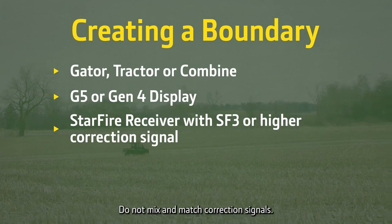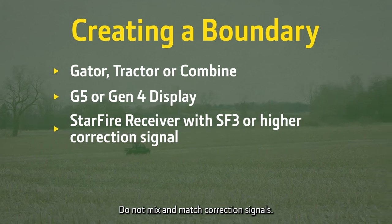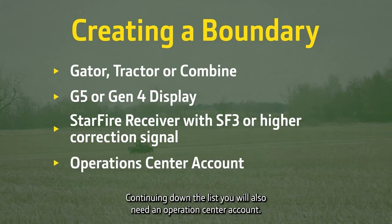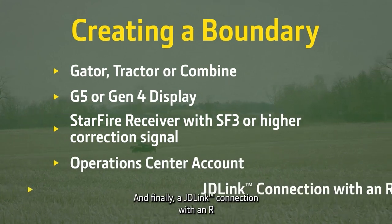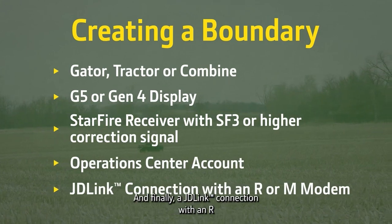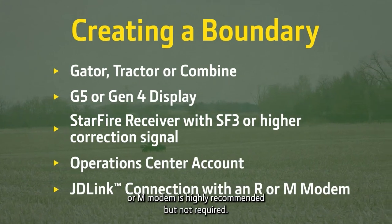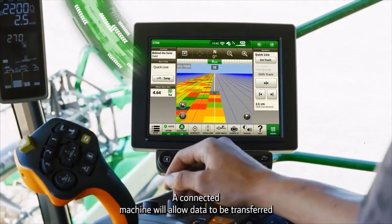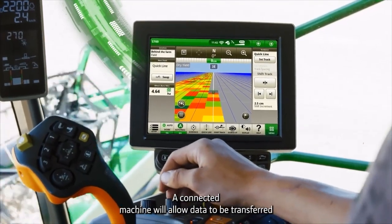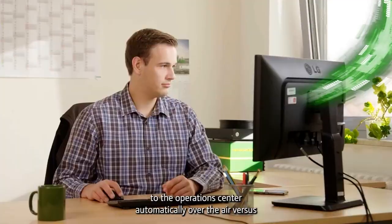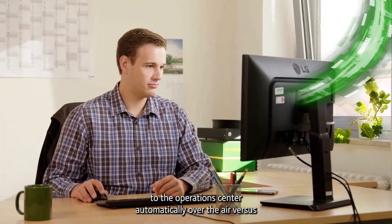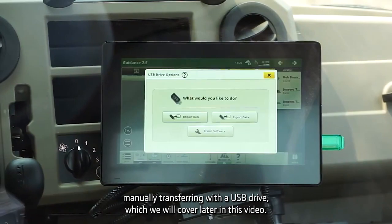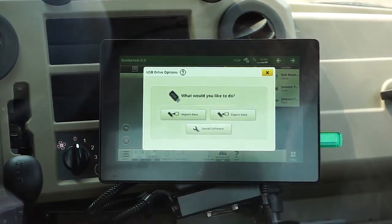Do not mix and match correction signals. You will also need an Operations Center account. And finally, a JDLink connection with an R or M modem is highly recommended, but not required. A connected machine will allow data to be transferred to the Operations Center automatically over the air versus manually transferring with a USB drive, which we will cover later in this video.